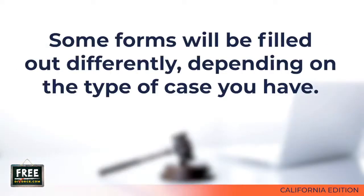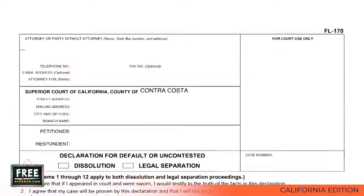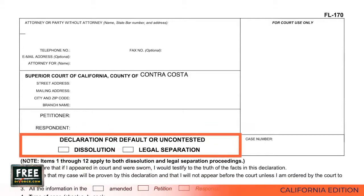Some of the additional court forms you will submit with your divorce judgment will be the same regardless of the type of case you have, but you fill them out differently depending on the type of case. For example, there's a form called Declaration for Default or Uncontested Dissolution, which is FL-170, that is filed along with your divorce judgment, but you will fill it out differently depending on the type of case you have. We will discuss the FL-170 in the next video.